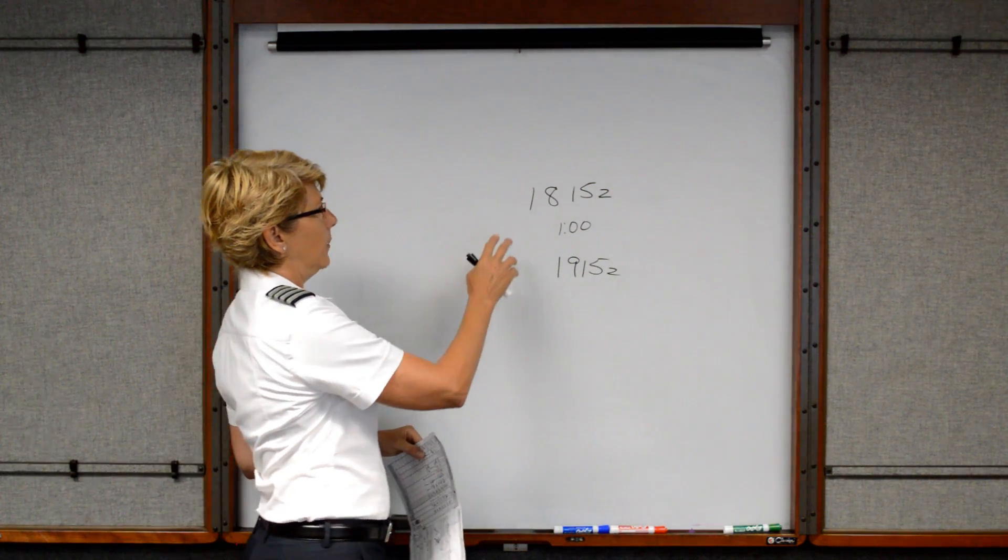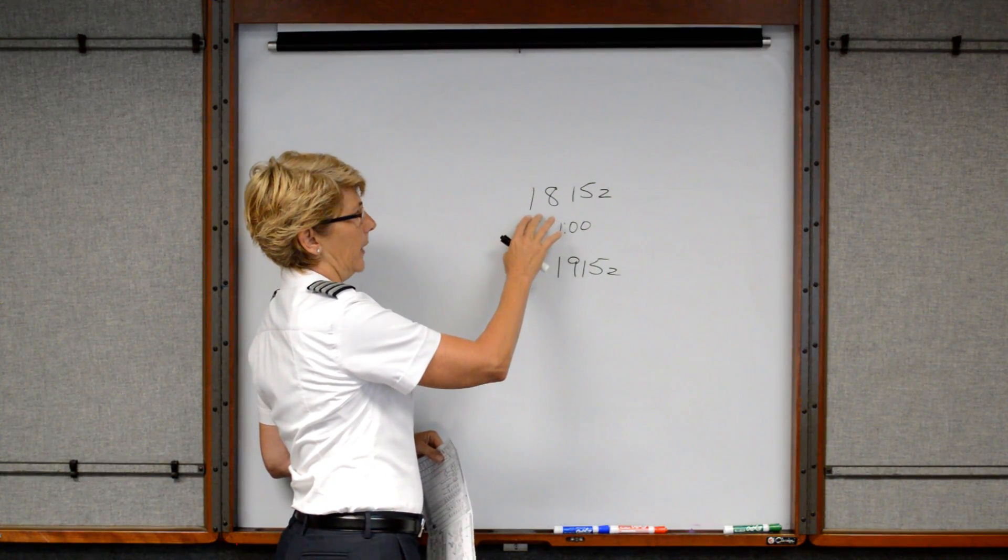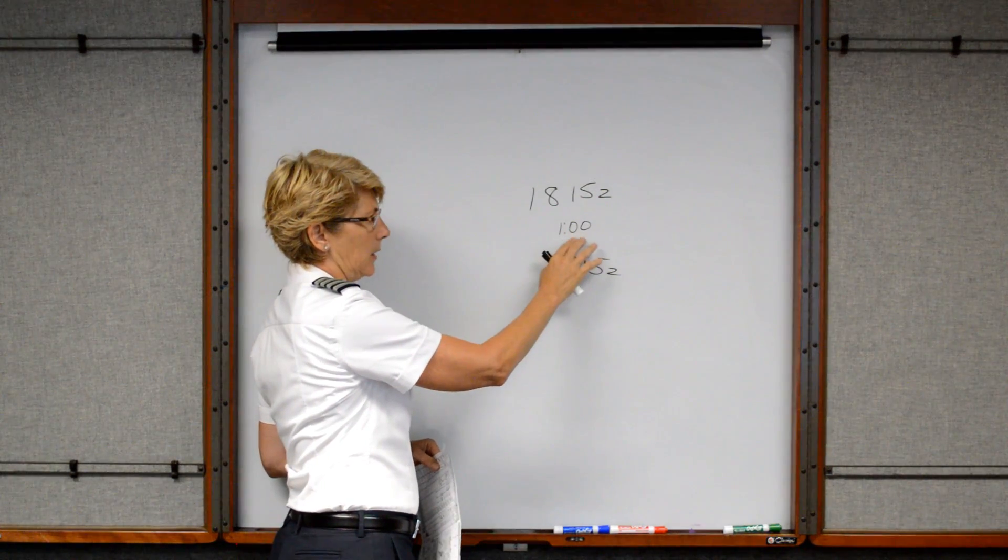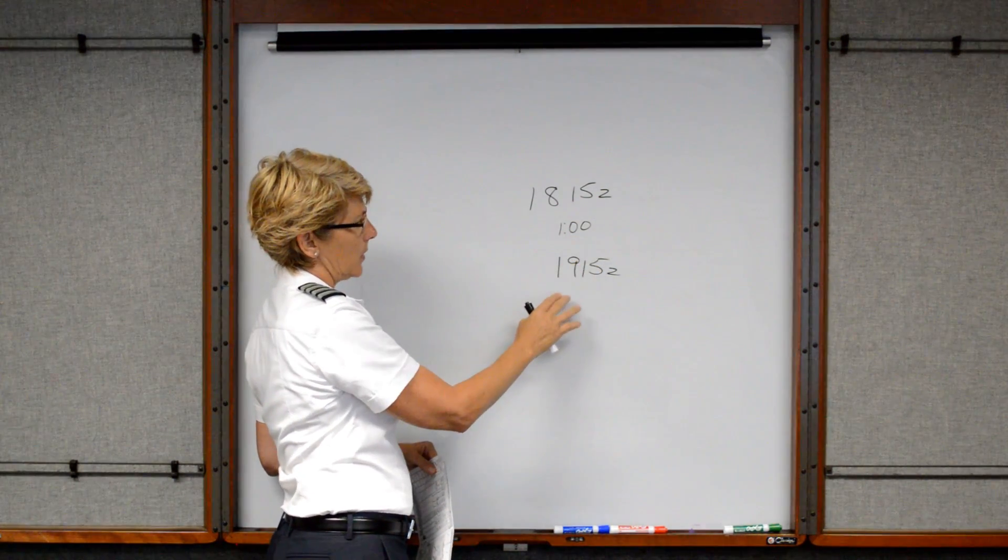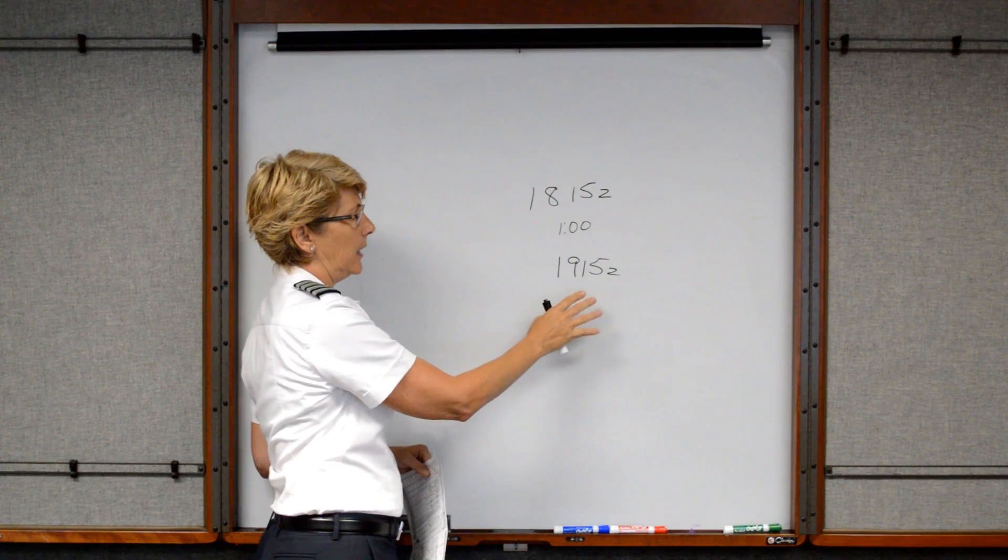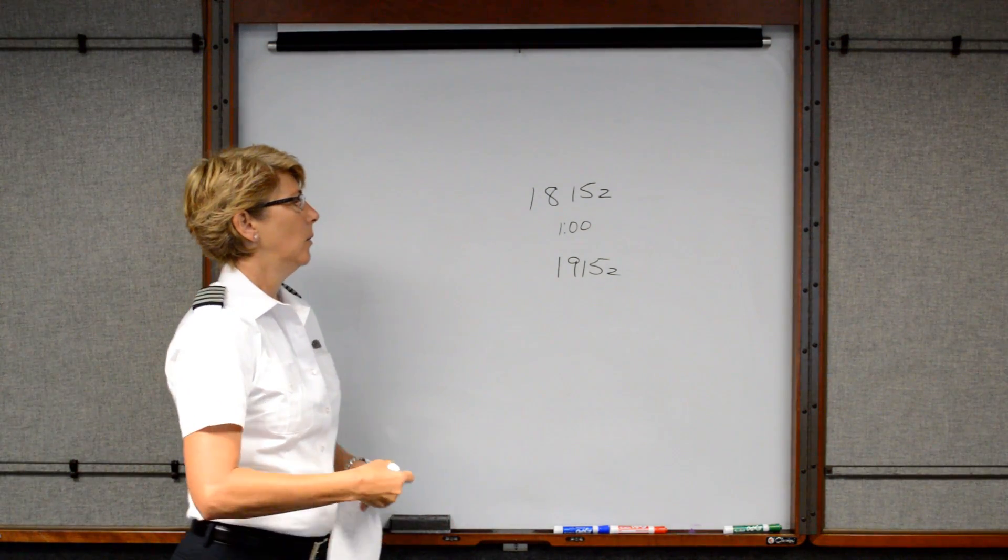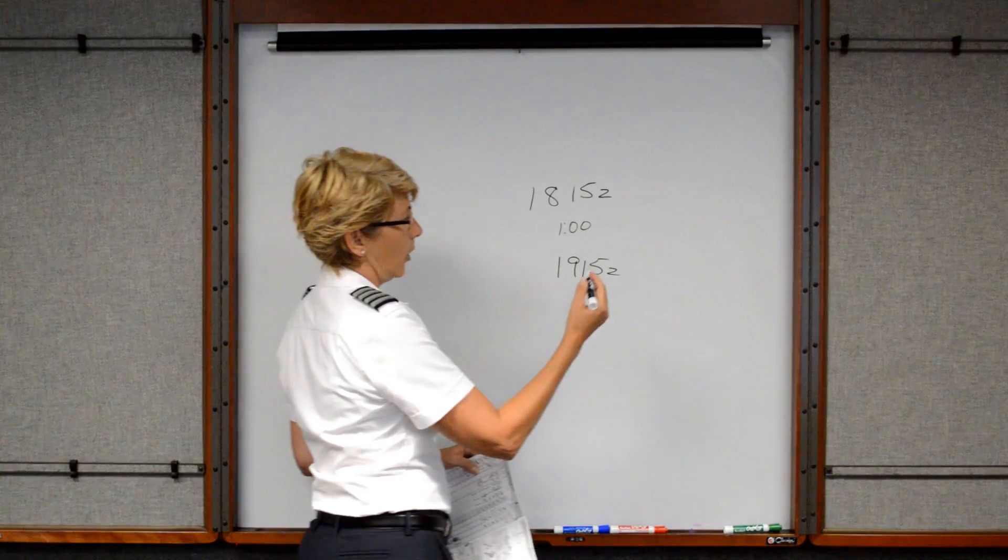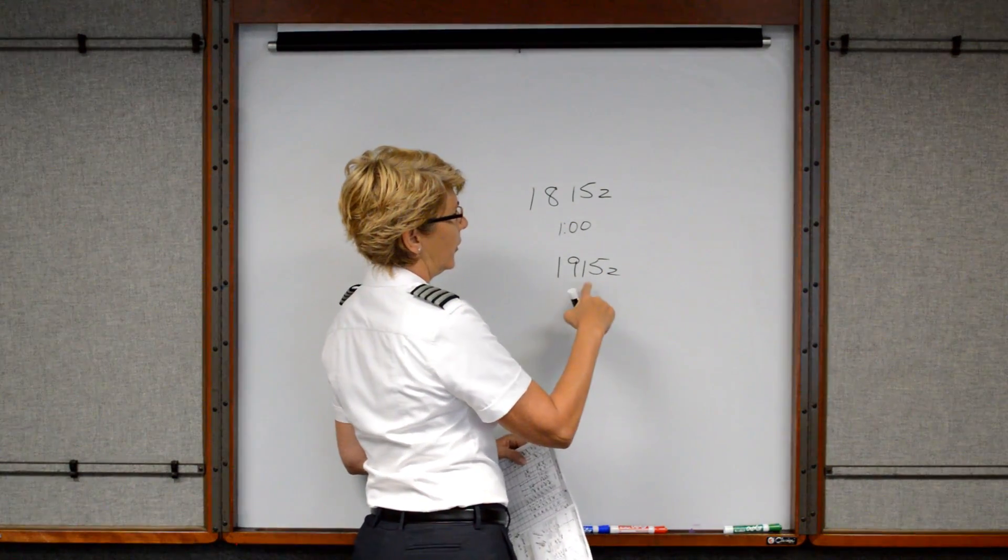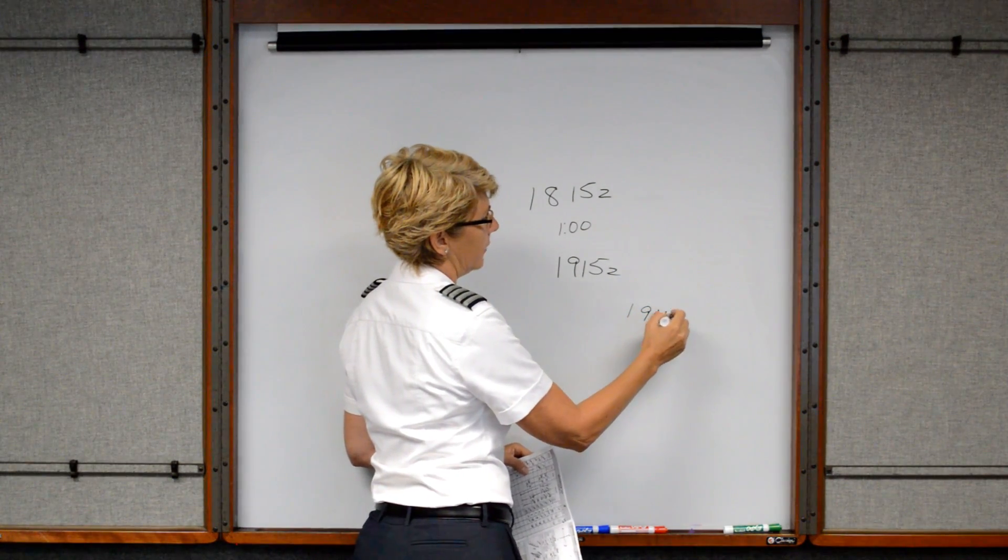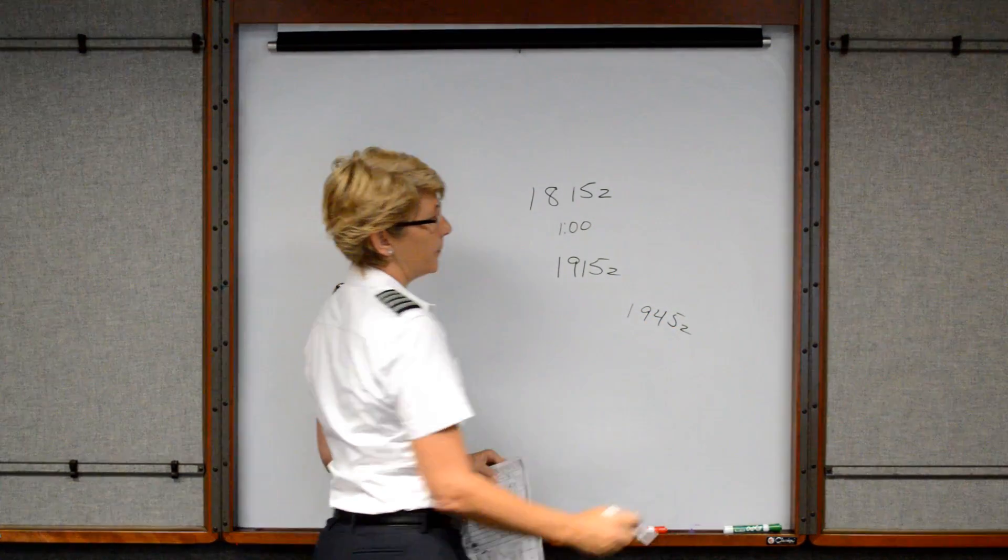If we departed and opened our flight plan at 1815 Zulu, then the flight service station sets a timer and expects us to arrive at 1915. What happens if we don't arrive at 1915? We are considered lost or missing if it's 30 minutes past this. So they're giving us to 1945 to make contact with them.